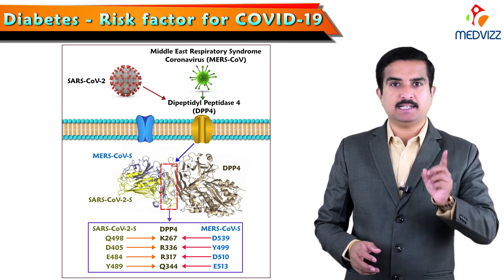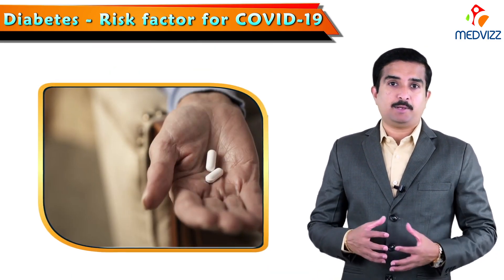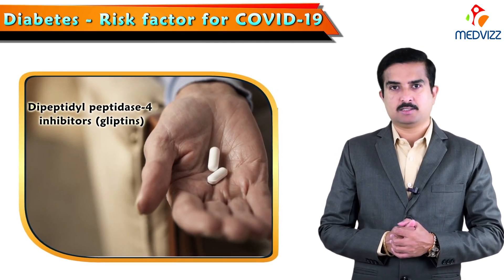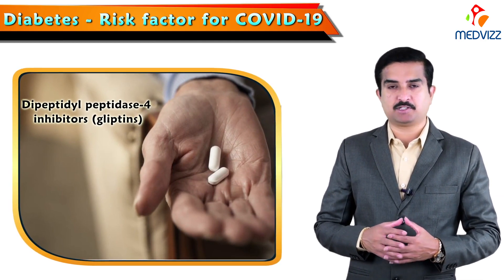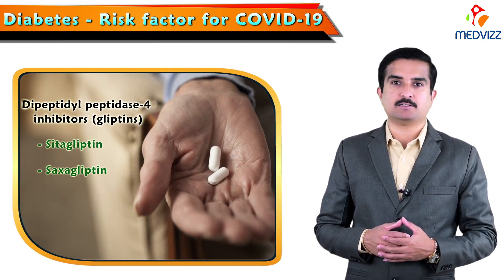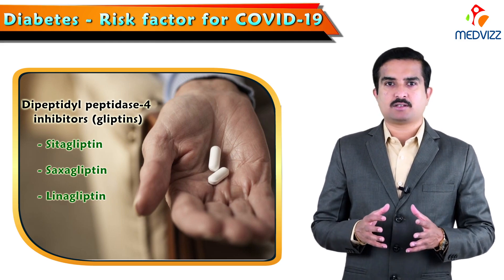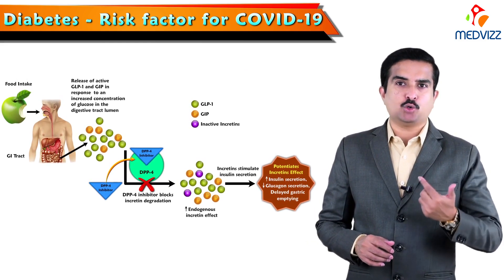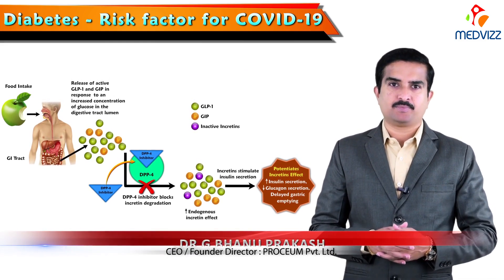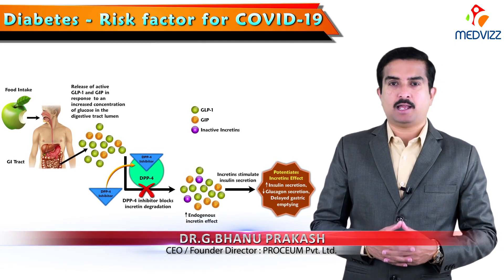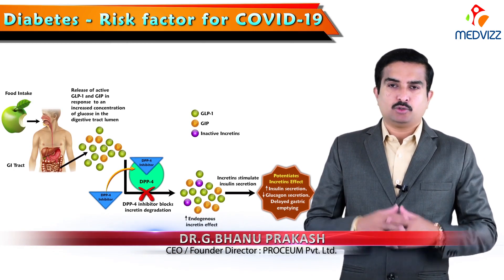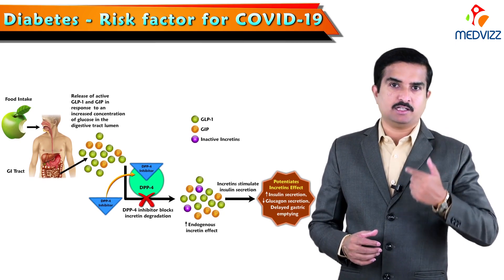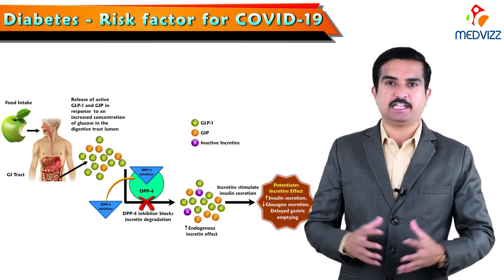DPP4 has a role in potentiating the effects of COVID-19 in diabetic individuals. Some diabetic patients may be taking drugs called dipeptidyl peptidase 4 inhibitors, commonly referred to as gliptins — examples include sitagliptin, saxagliptin, and linagliptin. These drugs inhibit DPP4 and indirectly increase the endogenous incretin effect by inhibiting the breakdown of GLP-1, resulting in increased insulin secretion, decreased glucagon secretion, and delayed gastric emptying.